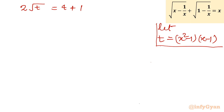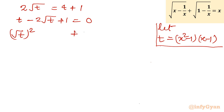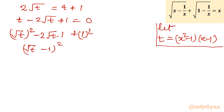Taking all terms to one side: t minus 2 root t plus 1 equals 0. I can write t as (root t)² and 1 as 1², with the middle term being 2 times root t times 1. So this is (root t - 1)² = 0, which concludes root t = 1, or t = 1.